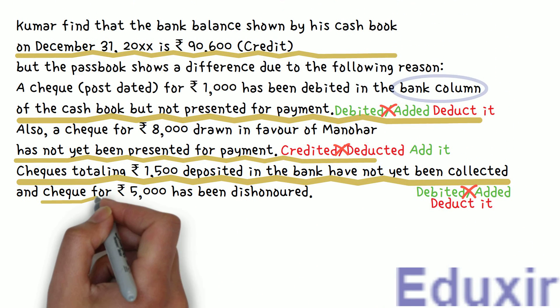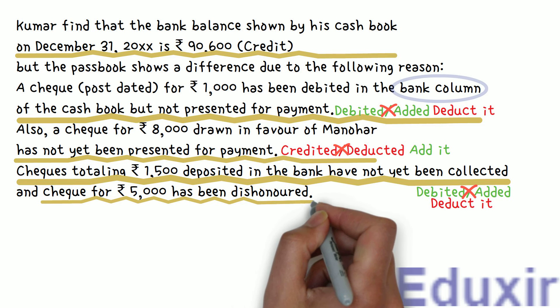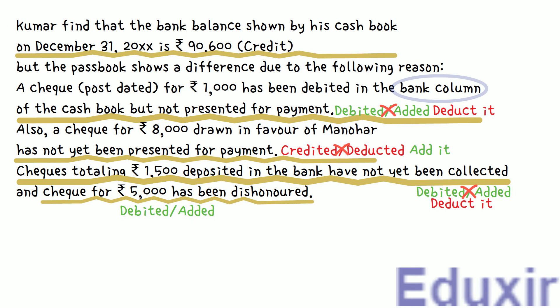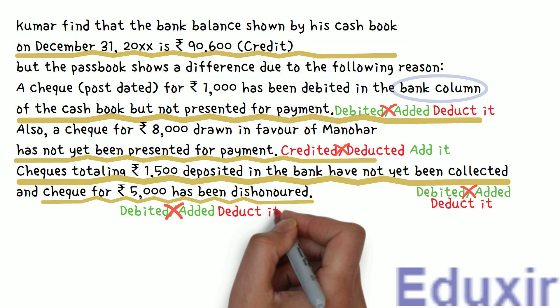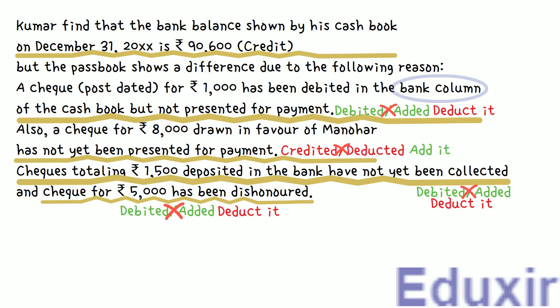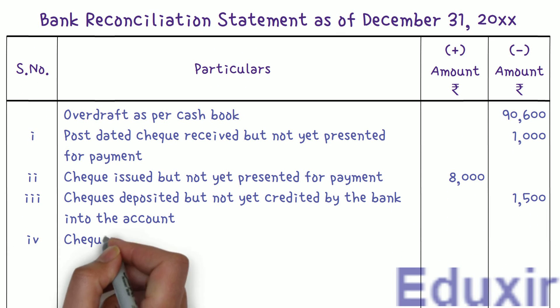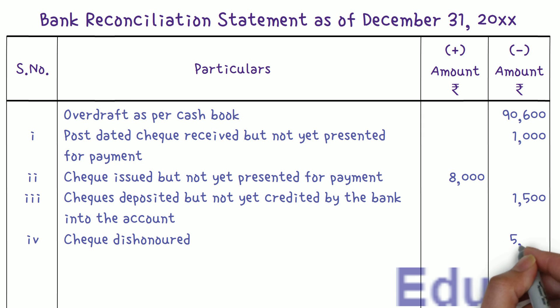Here it is specified that a check for Rs. 5,000 deposited into the bank was dishonored. When the business receives checks, it debits the cashbook and deposits them into the bank. However, this check is dishonored or bounced. The business does not know about this until the bank statement is received, so there won't be any additional entries in the cashbook regarding the dishonored check. As the check is dishonored, the bank does not make any entries in the passbook, or if already made, they are reverted. So we need to deduct this amount from the cashbook balance. We write the particulars as 'Check dishonored' and enter Rs. 5,000 in the minus amount column.